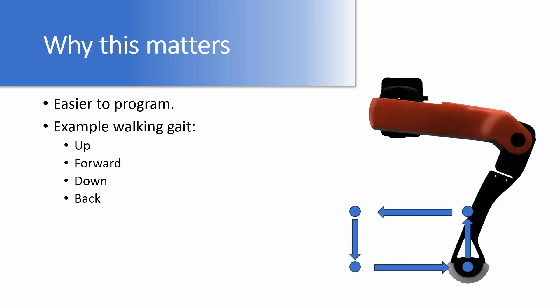Why does this matter? The simple answer is because it's easier to program. For example, if you're building a simple naive walking gait, you may move the foot position up, forward, down, and back again. It's a lot easier to program if all you're concerned with are these four positions. It's a lot harder if you have to keep track of these servo angles throughout these movements.